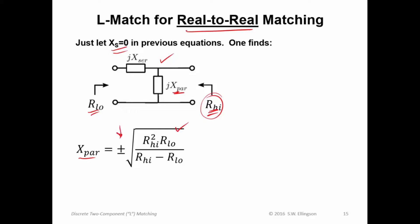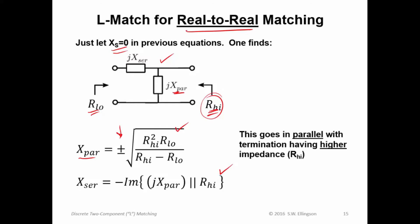Again, two possible solutions. And the series reactance is given by this expression, which is a little bit simpler, again, because X_s is zero. And as I've noted here, X_par, you will find if you derive this on your own, and I hope you do, always has to go in parallel with the higher-valued resistance, and the series reactance goes in series with R_low.